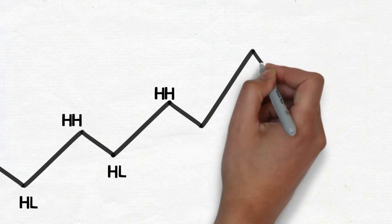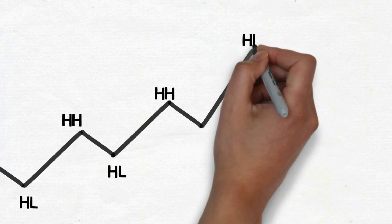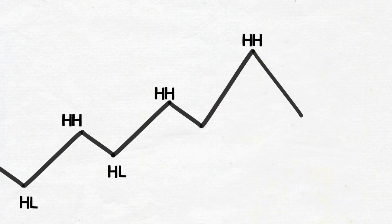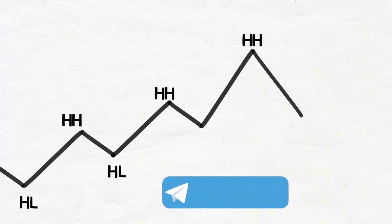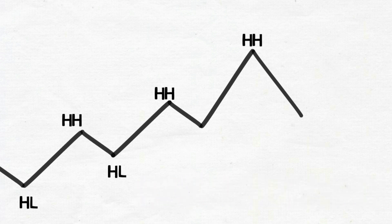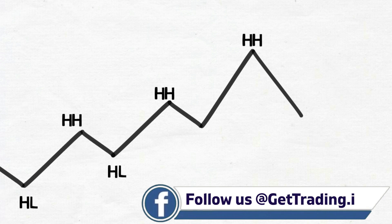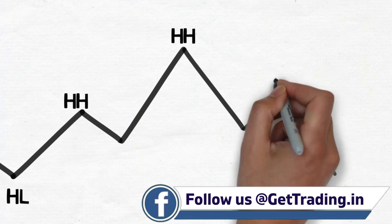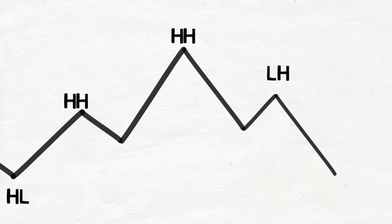Let us forget about higher lows for a moment. Now the actual story starts here. Continuing the uptrend, there should be another swing formed with one more higher high. But due to decrease in buying pressure and rejection of higher prices by sellers, the swing forming next will not have a higher high but a lower high compared to the previous swing. Now the combination of these three swings is nothing but the head and shoulders pattern.